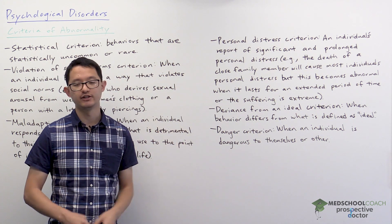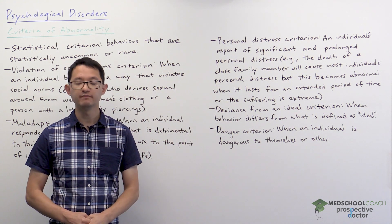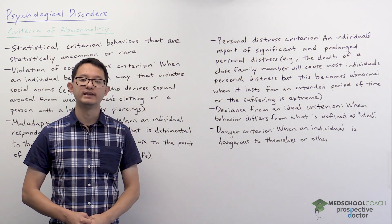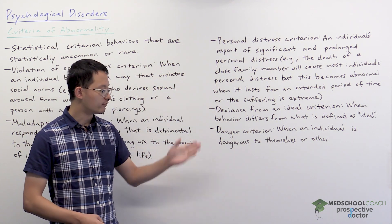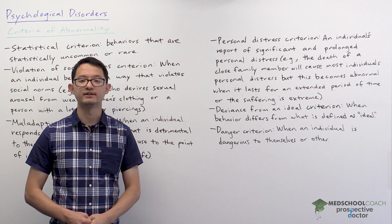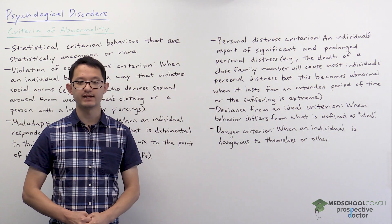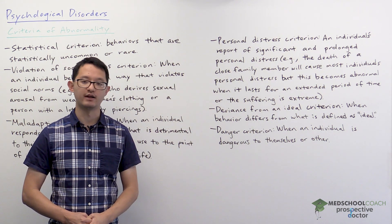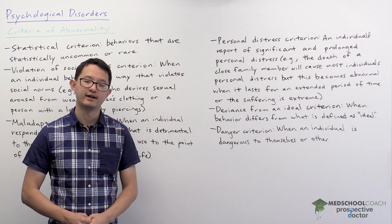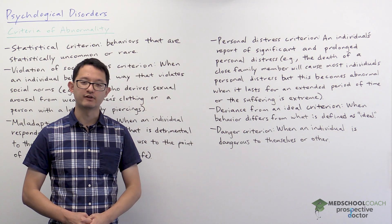Finally, we have the danger criterion. This one's pretty straightforward — an individual will fulfill this criterion if they are dangerous to themselves or to other individuals. Those are the criteria of abnormality.